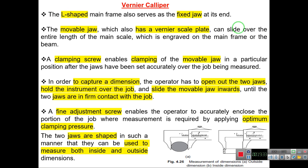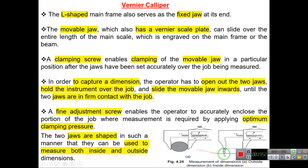The two jaws are shaped so they can measure both external and internal dimensions: in figure A, an external dimension is measured, and in figure B, an internal dimension is measured.